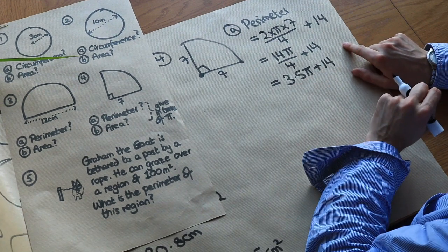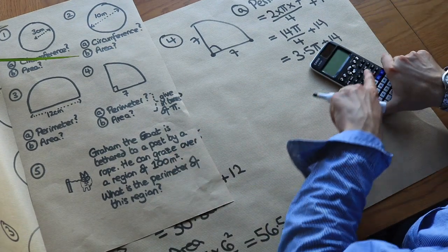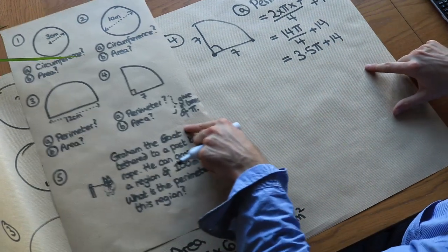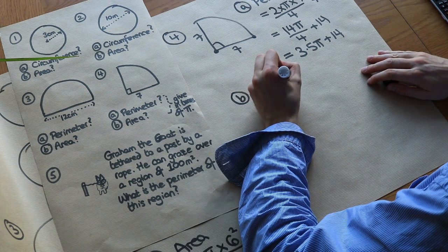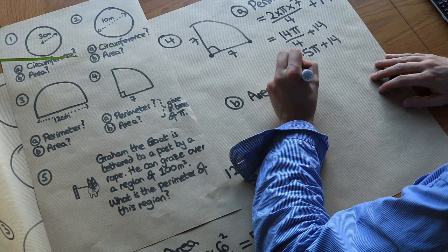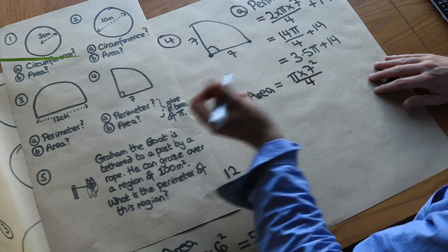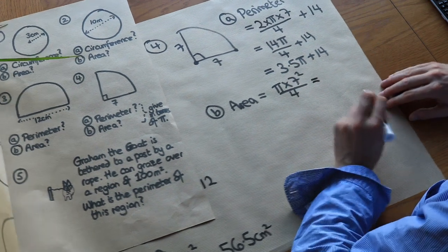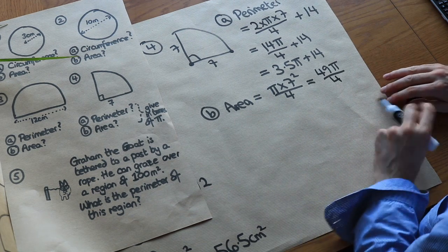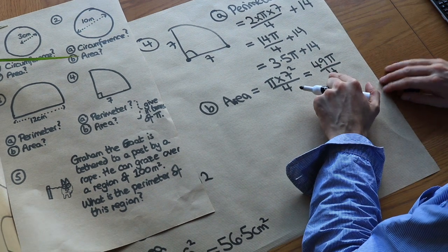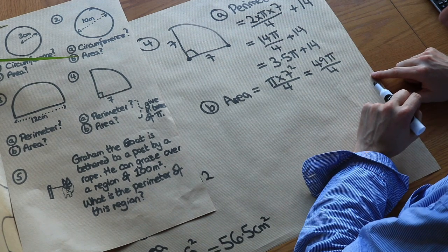So the perimeter is the expression 3.5π + 14 in terms of pi — we could press SD to get a decimal, but that's not what's required. For the area, it's πr² divided by 4 because we only have a quarter circle: π times 7 squared divided by 4. Simplifying, 7 squared is 49, so we get 49π over 4. We can leave it as a fraction rather than introducing a decimal.